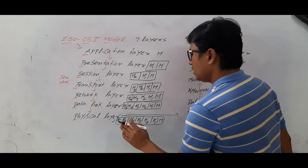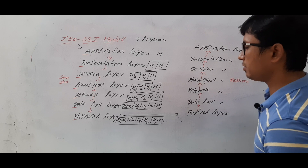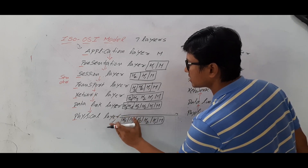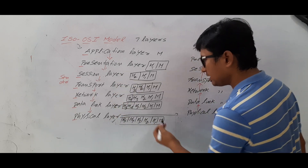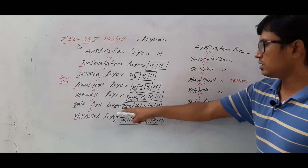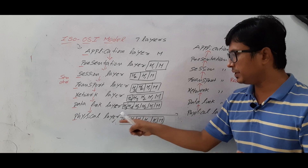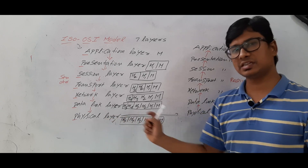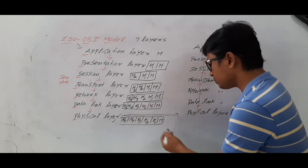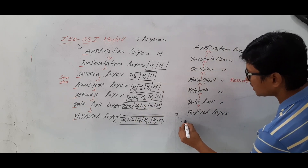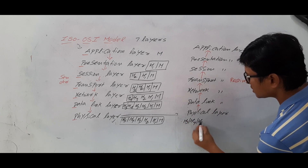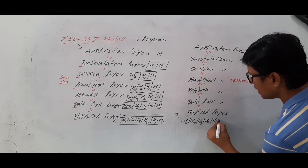The Physical layer does not add its own header. It sends the data through the transmission medium in terms of bits. The medium is nothing but a link to transfer data from sender to receiver. Using this medium, the message H5, H4, H3, H2, H1, and M reaches the destination Physical layer.